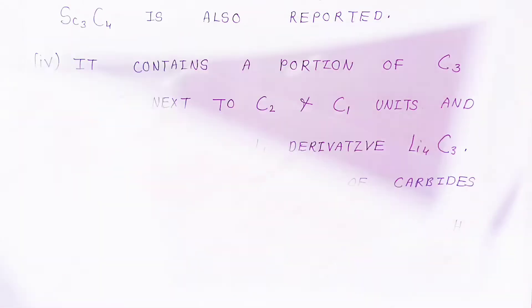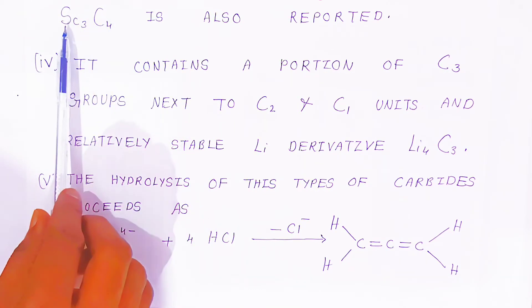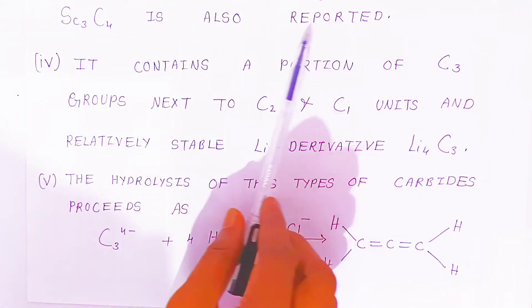For example, scandium tetracarbide. This is scandium carbide. Scandium is 3 and carbon is 4, so Sc3C4. This scandium carbide is also reported.